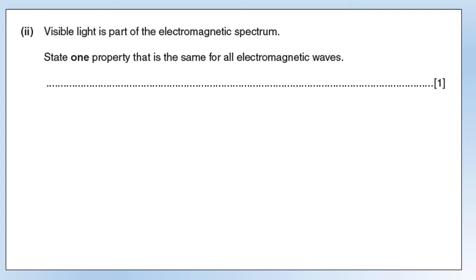Visible light is part of the electromagnetic spectrum. State one property that is the same for all electromagnetic waves. They all travel at the same speed in a vacuum, 3 times 10 to the 8. Just a note here that in other media or materials, they can travel at slightly different speeds, but they all travel at the same speed in a vacuum.